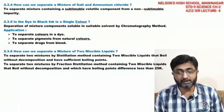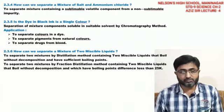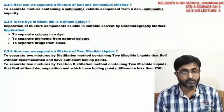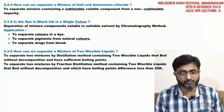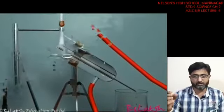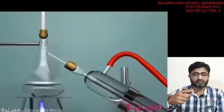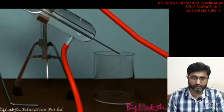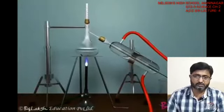Separation by distillation requires two liquids that have a sufficiently large difference in boiling points — more than 25 degrees Celsius — and should be non-decomposable when heated. In the experiment, one of the substances gets boiled off, travels through a cooling tube where condensation occurs, and is then collected in a beaker.